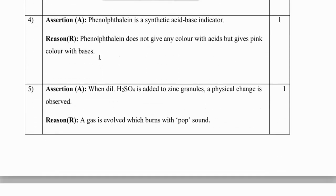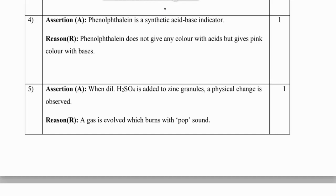Next question: phenolphthalein is a synthetic acid-base indicator; phenolphthalein does not give any color with acid but gives pink color with bases. Both statements are correct, and the reason is a correct explanation of the assertion, so the answer is A.